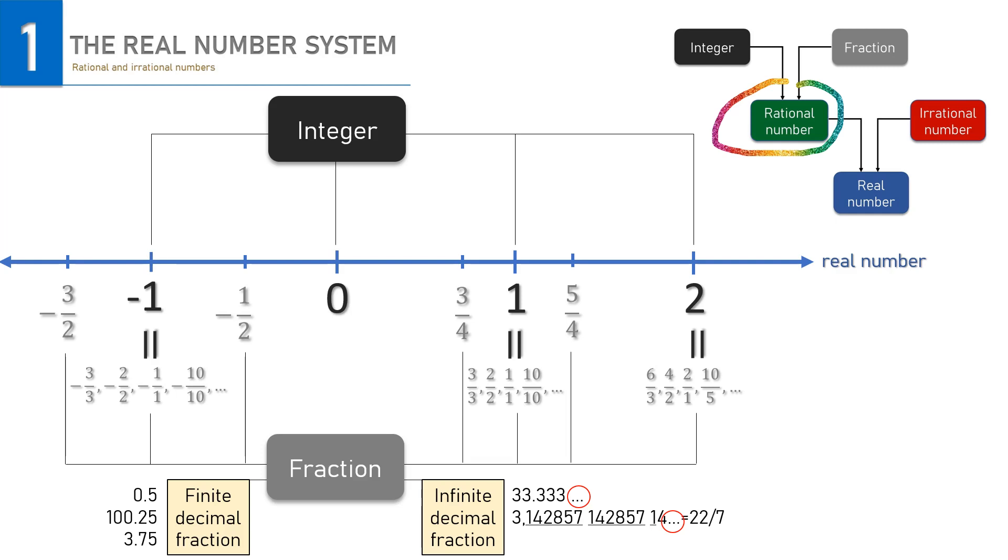Finally, there is a case when the infinite decimal fraction has no recurring number. For instance, square root of 2 or pi, the circle diameter, these are the examples of irrational numbers. Those numbers cannot be made as a ratio of two integers. But please notice that between two integers, there is always at least one irrational number.